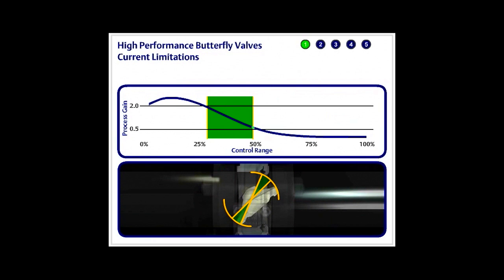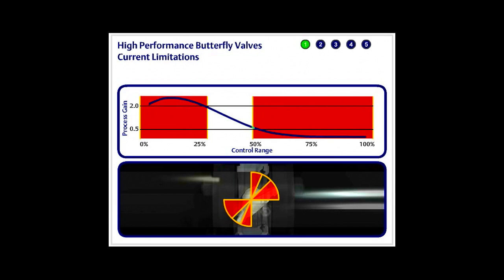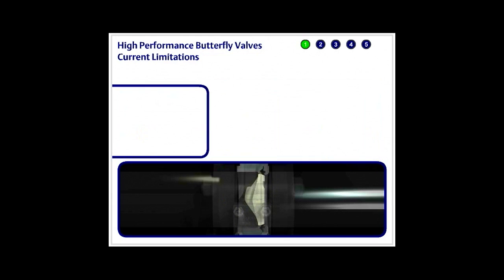When conditions call for the butterfly valve to operate outside of this range, it typically cycles at low flow and is sluggish at high flow. In these cases, the valve is often switched from auto mode to manual, or it is severely detuned, which means it provides no control at all.